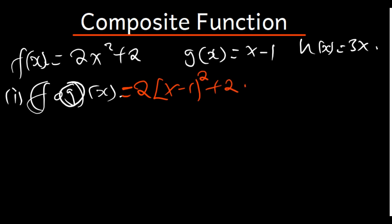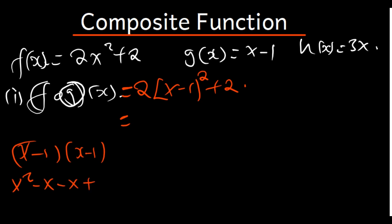Now I need to simplify this. x - 1 multiplied by x - 1: x times x is x², x times -1 is -x, then -1 times x is -x, and -1 times -1 is positive 1. So this gives us x² - 2x + 1.